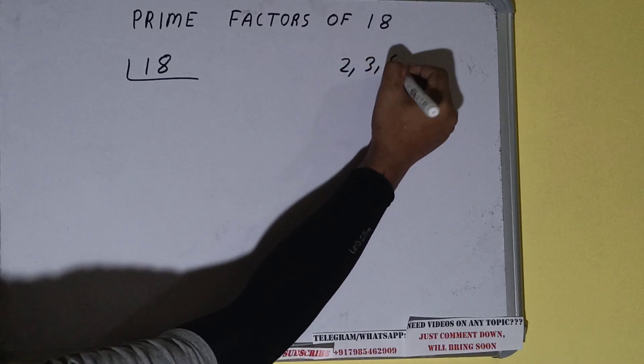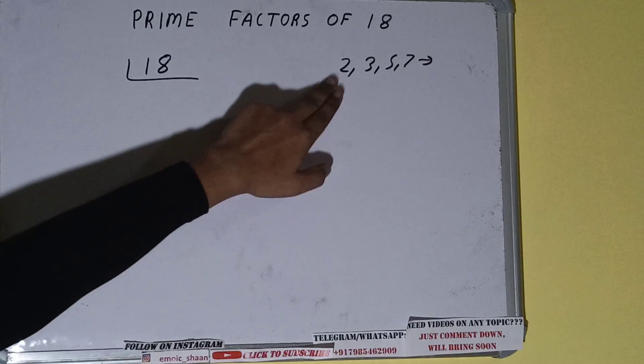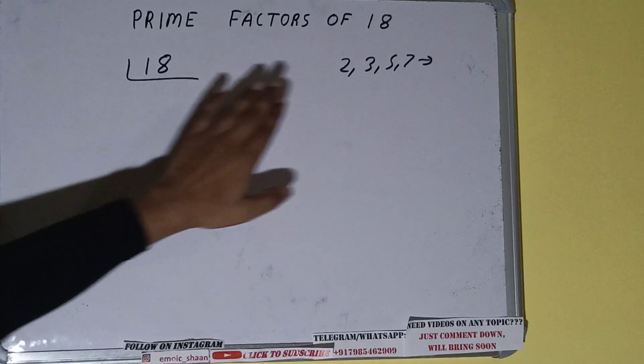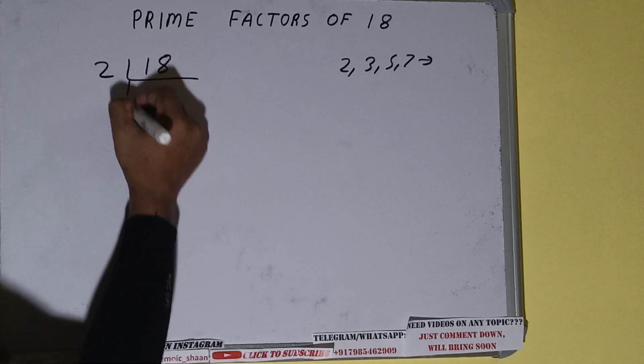All right, so we'll check with the lowest prime number, that is two. Is the number 18 divisible by two? Yes, it is. So divide it and we'll be getting nine. Is nine divisible by two? The answer is no, because the number is odd.